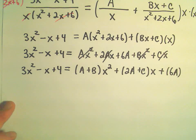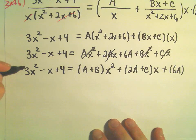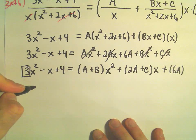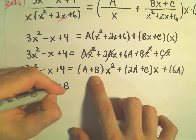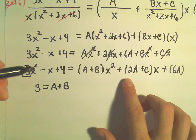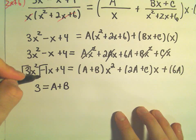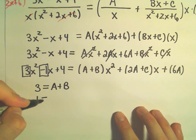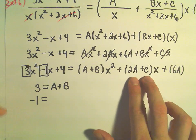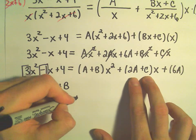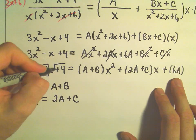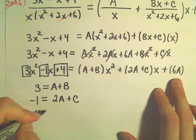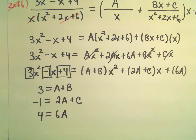And again, this is where we do our equating of coefficients. So the coefficient on the left in front of the x² is a positive 3. In front of the x² on the right, we have, well, A + B. In front of the x on the left side, we've got a negative 1. So we'll take negative 1. The coefficient in front of the x on the right side is 2A + C. And then last but not least, our constant on the left is 4. We've got 6A on the right. So we'll set those equal to each other.